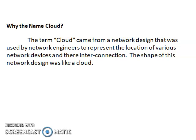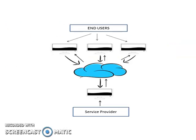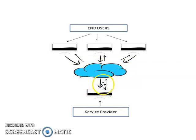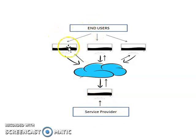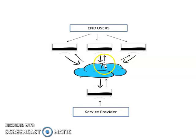I will show the cloud symbol. These are the end users. The end users can access the services from the cloud, and those services are provided by the service provider — now called the cloud vendor. Cloud vendor can provide various services to customers. The customers don't know whether the service is from a particular server; they don't know where the service comes from. That's why the symbol is a cloud.